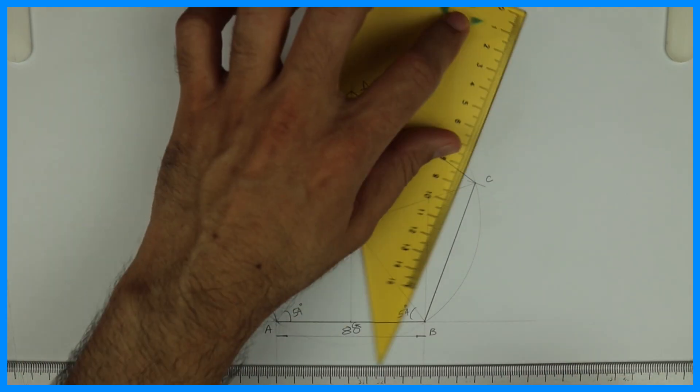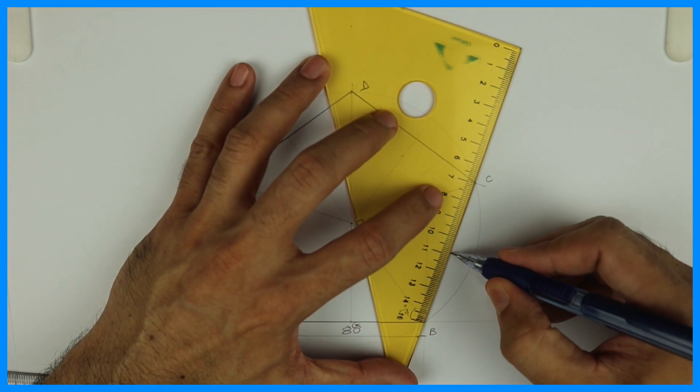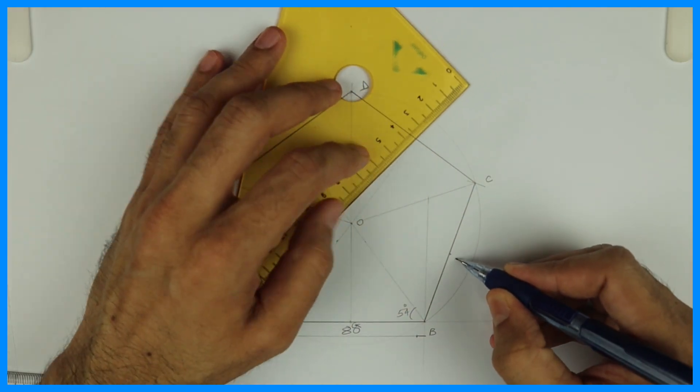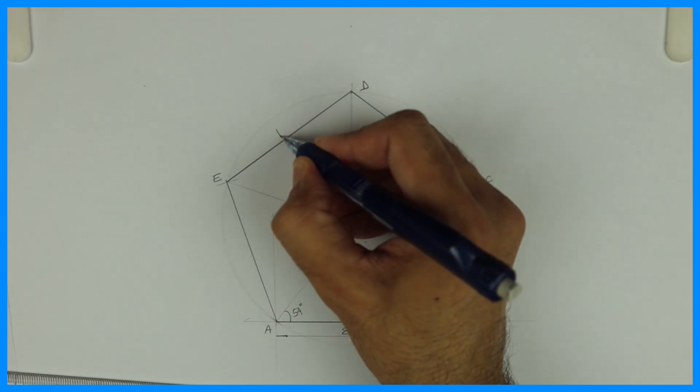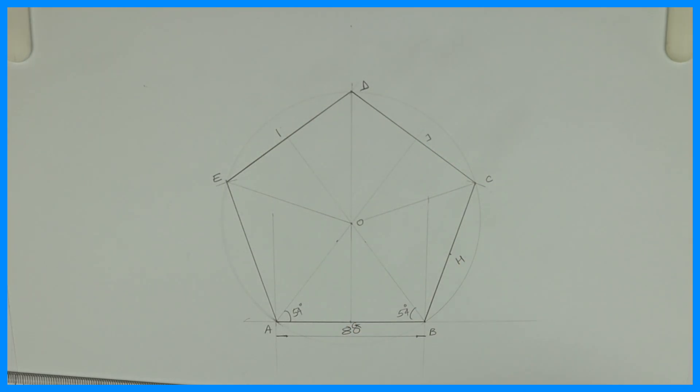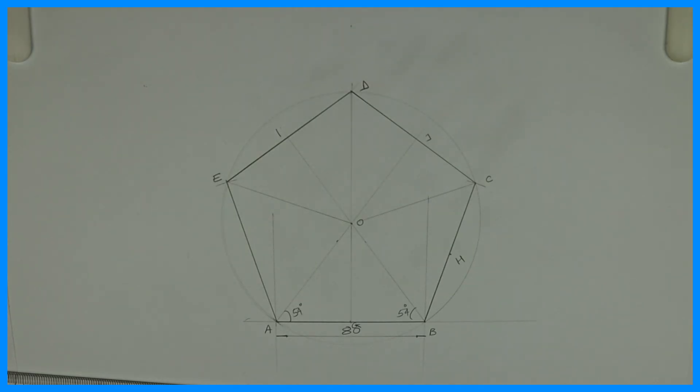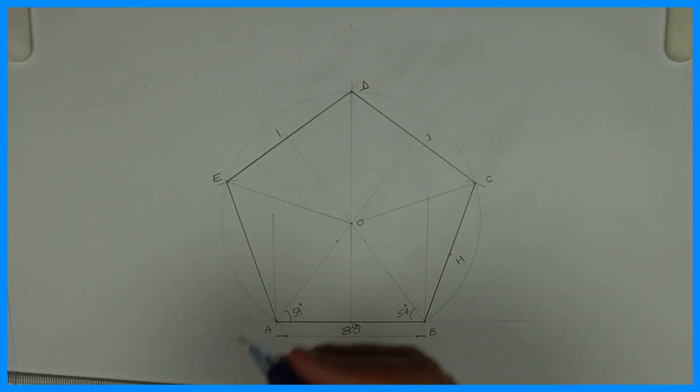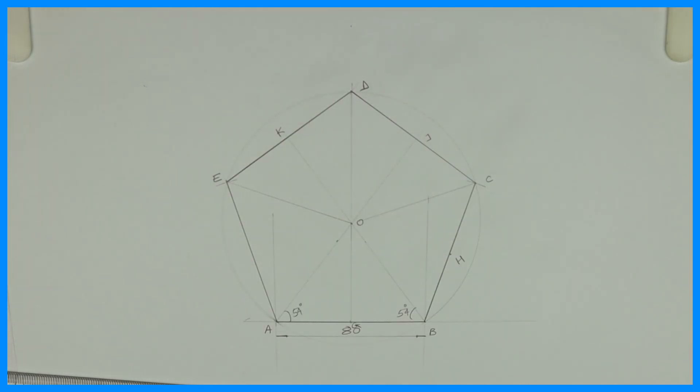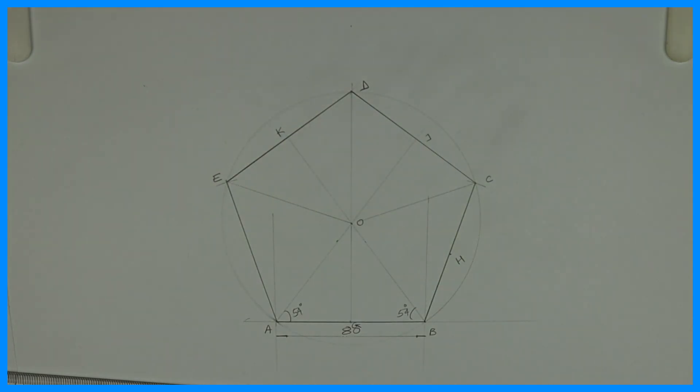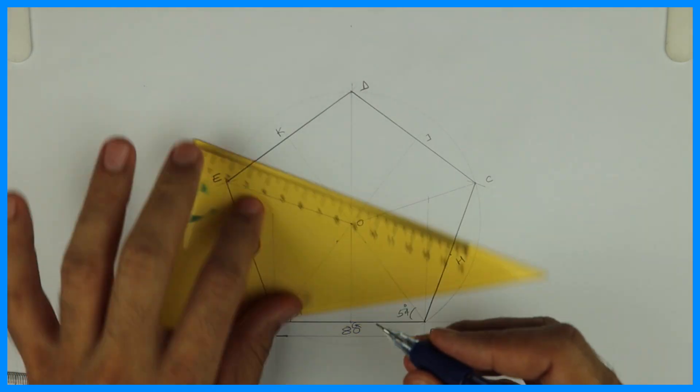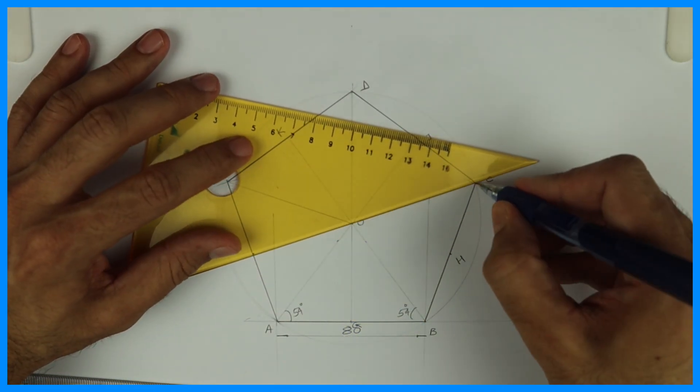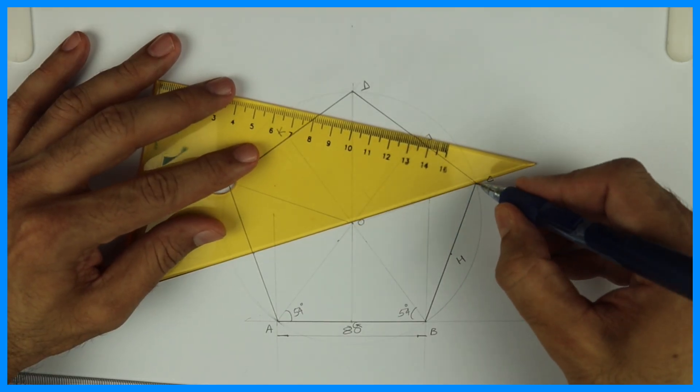This is G. Then we'll take half of BC. This is H. Then this is J, K. And we'll take half of AE also. That will pass through O. This is L.